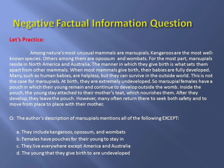Question: 'The author's description of marsupials mentions all of the following EXCEPT.' Choice A: They include kangaroos, opossum, and wombats. Choice B: The females have pouches for their young to stay in. Choice C: They live everywhere except America and Australia. Choice D: The young that they give birth to are undeveloped. Can you tell me the correct answer?